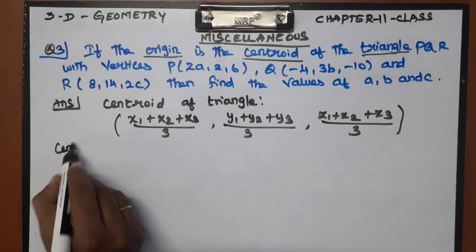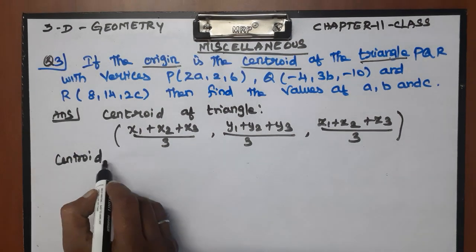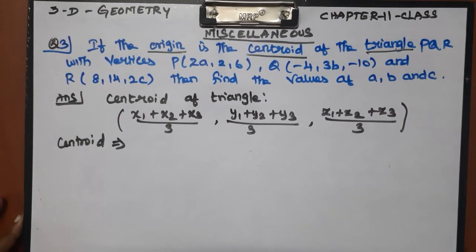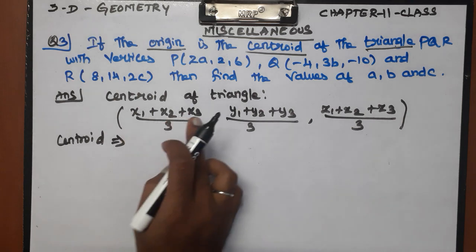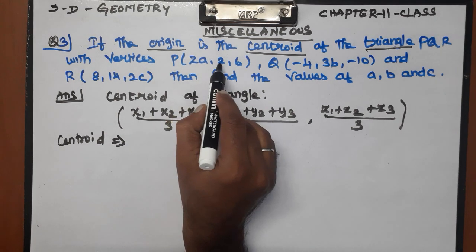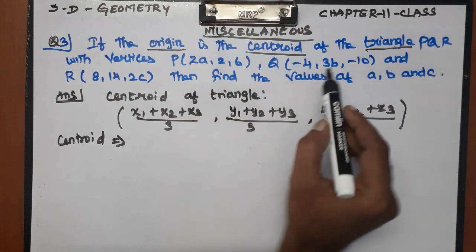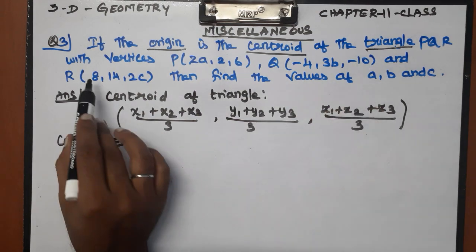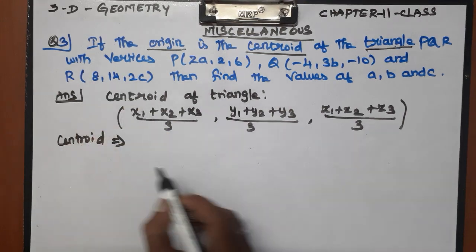Now for the centroid formula: x1, x2, x3 — this is x1, y1, z1; this is x2, y2, z2; this is x3, y3, z3. Divided by 3.